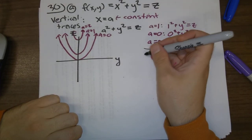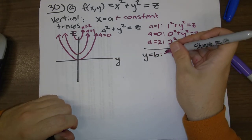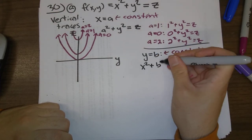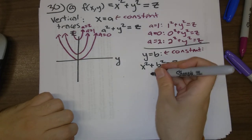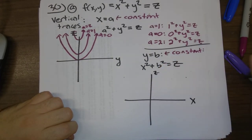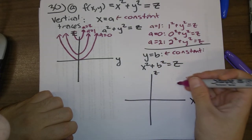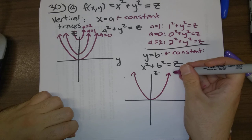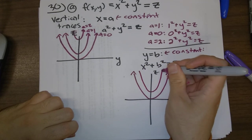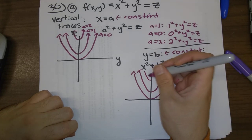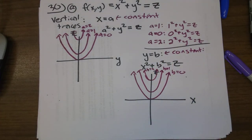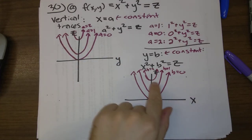We could also do vertical traces for y equals b, where b is a constant. Those look extremely similar: x squared plus b squared equals z. For different values of b, we get different parabolas in the xz-plane — if b is 0, z equals x squared; if b is 1, z equals x squared plus 1; if b is 2, z equals x squared plus 4. So again, parallel upward-opening parabolas.